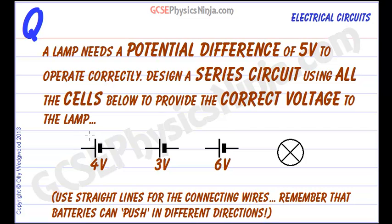We are given a 4 volt cell, a 3 volt cell and a 6 volt cell, and here's our lamp. The thing to remember is that cells and batteries can push in different directions.